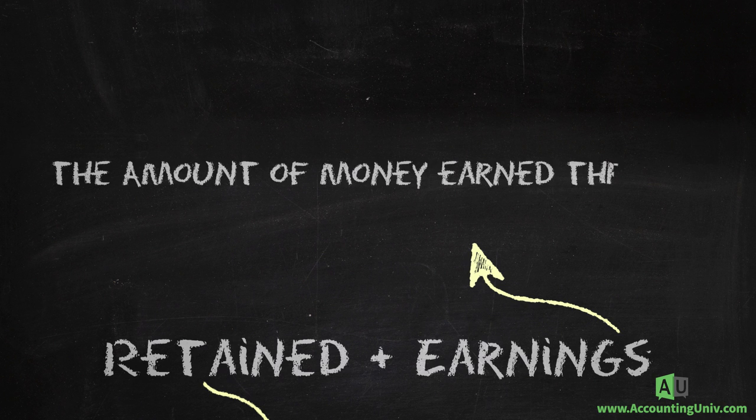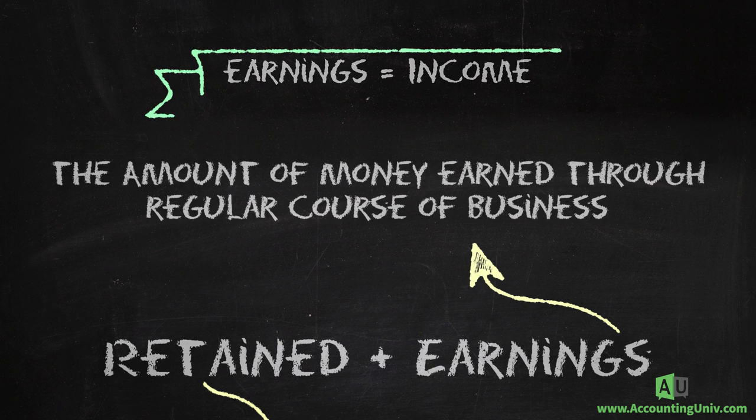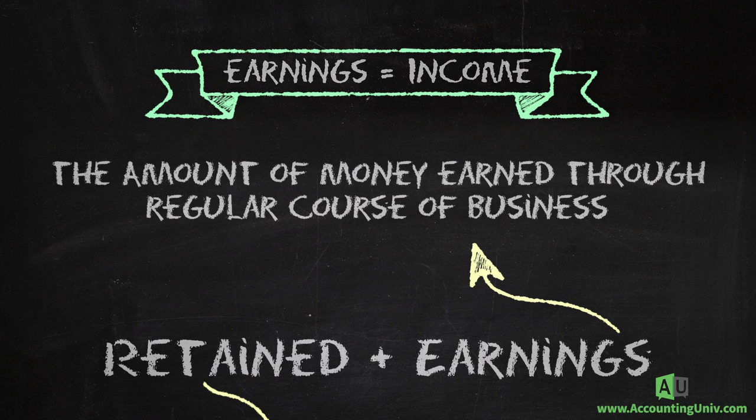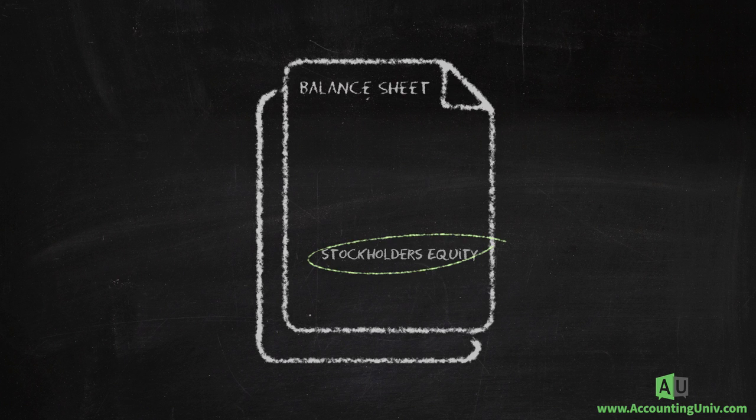Earnings is the amount of money earned through the regular course of business after all expenses are deducted. Where is retained earnings reported? Retained earnings is reported in the stockholders equity section on the balance sheet.